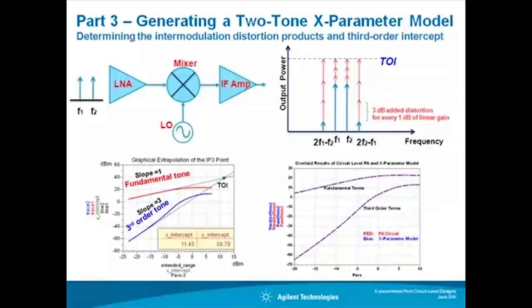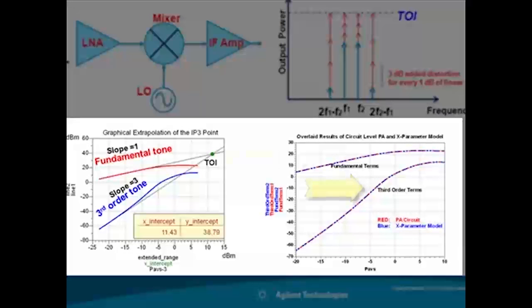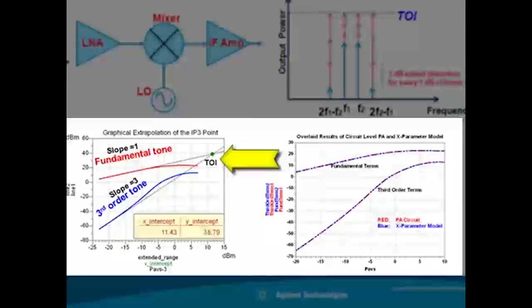In video three I showed how to generate an X parameter model with two input tones. The model was then used to accurately determine intermodulation distortion products and third-order intercept point.